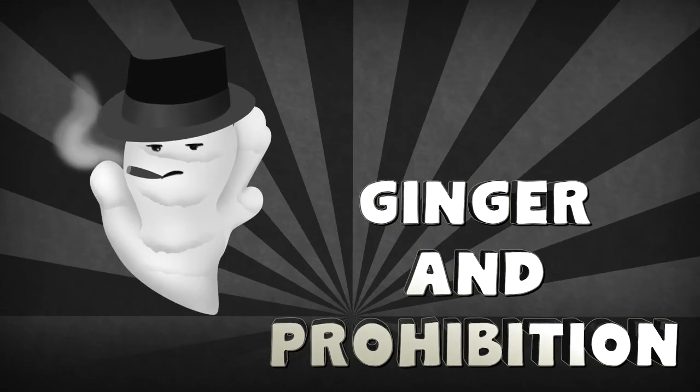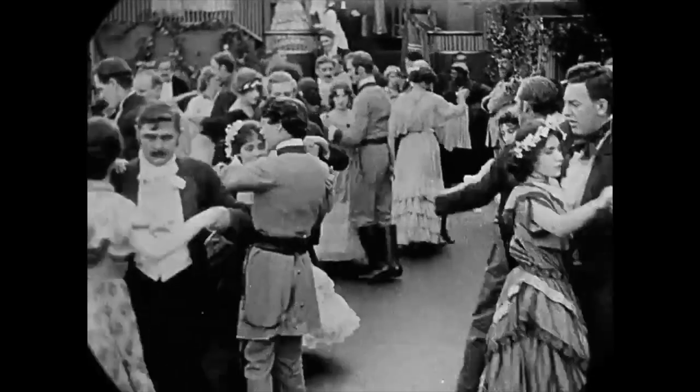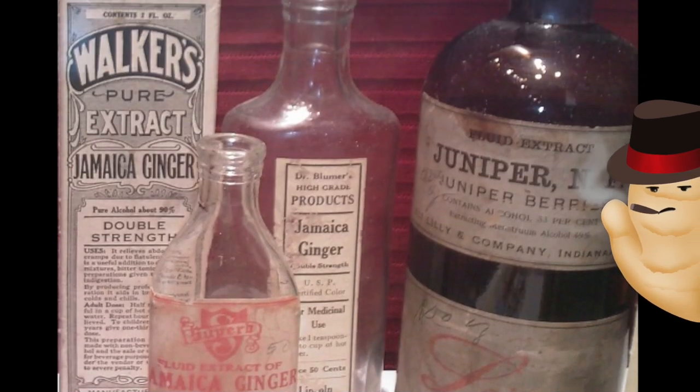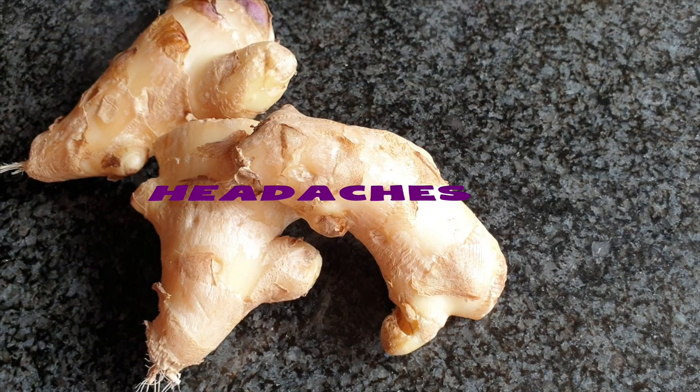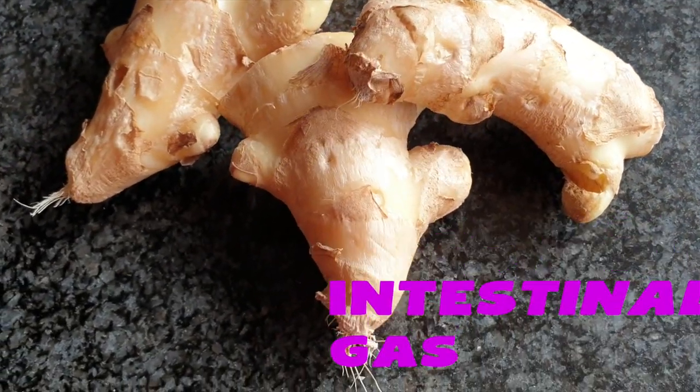Ginger and Prohibition. Ginger is just a fine outstanding spice that everybody loves. Well, isn't that just ginger peachy? Not so fast. You see, in the 1860s, there was a medicinal product being sold known as Jamaica ginger, which did in fact have ginger in it. And it was used for headaches, upper respiratory infections, menstrual disorder, and intestinal gas.